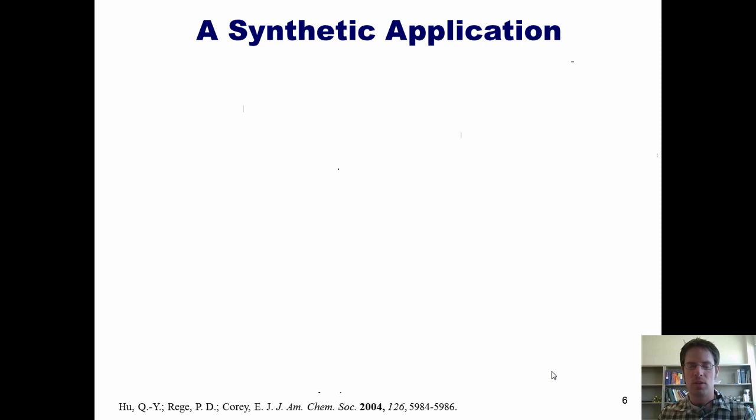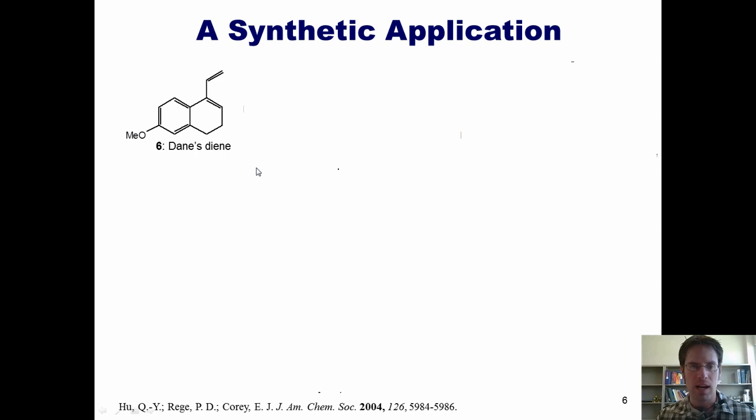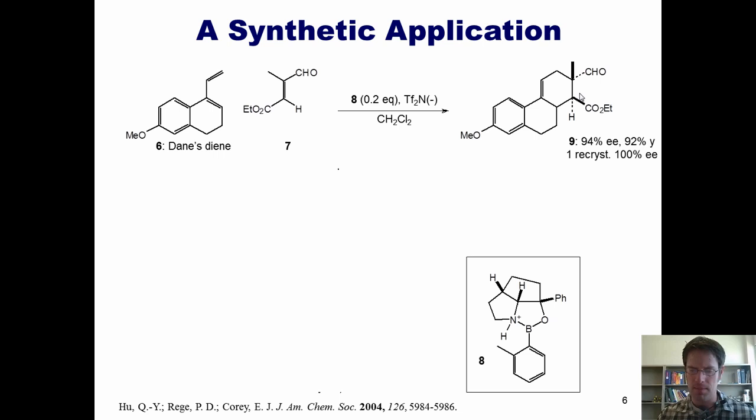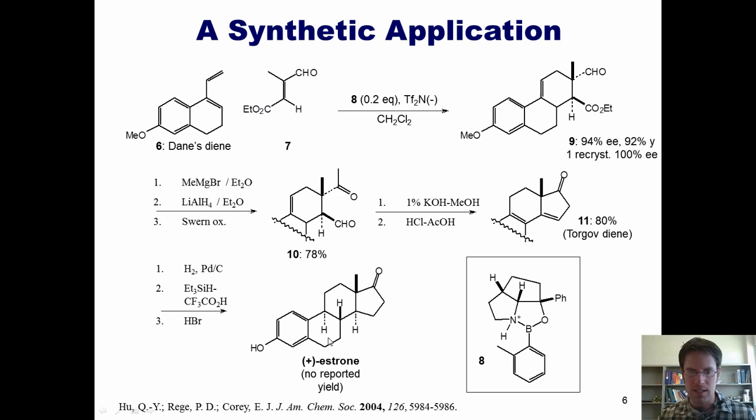Since its discovery in the late 1920s, the Diels-Alder reaction has probably been used to synthesize literally tens of thousands of molecules. One example from Professor E.J. Corey's group at Harvard: in 2004, they reported treating Danishefsky's diene with dienophile 7 and chiral catalyst 8 to stereoselectively give product 9, with 94% enantiomeric excess and 92% yield. Compound 9 was then converted into estrone — an estrogenic hormone significant in numerous biological processes in females, particularly related to menopause.